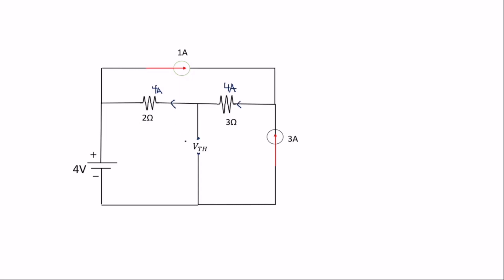With Thevenin's theorem, you choose a direction — I choose this loop to work with, but you can also choose the other loop and get the same answer. When you choose this loop, the sign moves opposite to the current, so you get the four-volt source plus the Thevenin voltage equal to negative two ohms times the current.